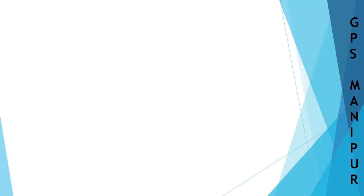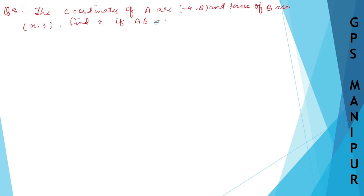We are doing exercise 3.2, question number 3. The question says: the coordinates of A are (-4, 8) and those of B are (x, 3). Find x if AB is equal to 13.